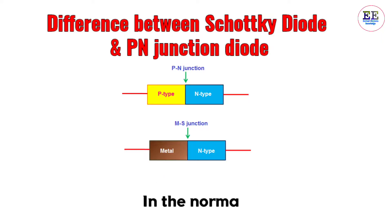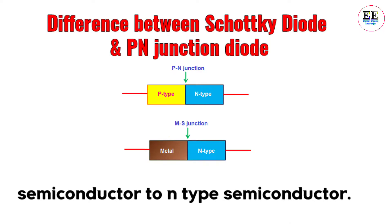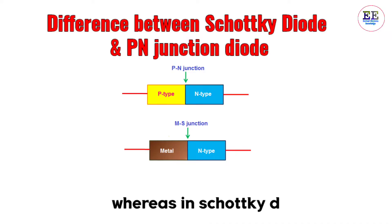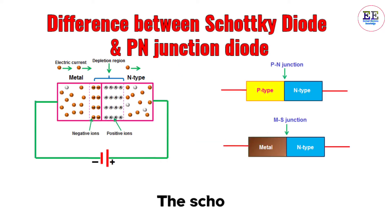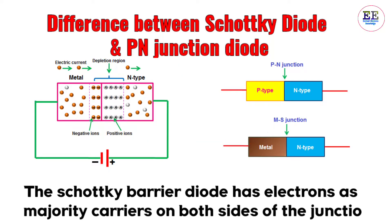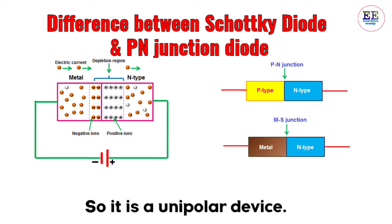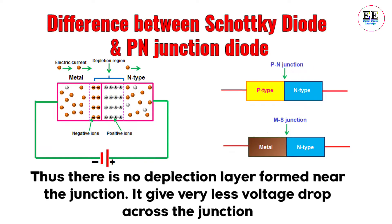Now let's see the difference between the Schottky diode and the PN junction diode. In the normal rectifier-grade PN junction diode, the junction is formed between a P-type semiconductor and an N-type semiconductor, so it is a bipolar device. Whereas in the Schottky diode, the junction is between an N-type semiconductor and a metal plate. The Schottky barrier diode has electrons as majority carriers on both sides of the junction, so it is a unipolar device.